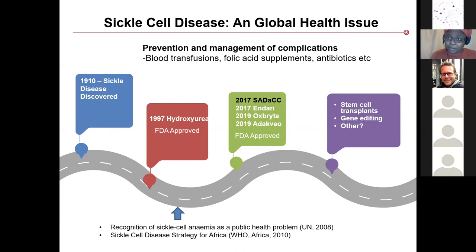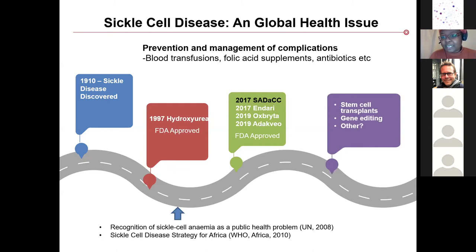Fortunately, a group of advocates from Africa — politicians, clinicians, and healthcare workers — got together and lobbied the United Nations. In 2008, they were successful in that sickle cell disease became recognized as a public health problem. Although sickle cell disease was discovered in 1910, it was only more than 80 years later that the first drug was FDA approved for it — and even that drug was a repurposed one, not developed specifically for sickle cell disease.